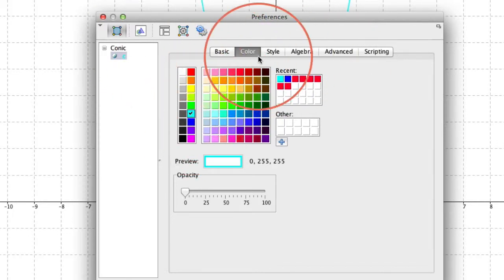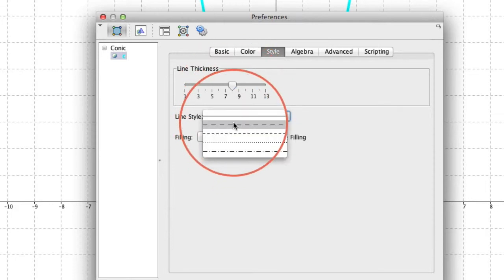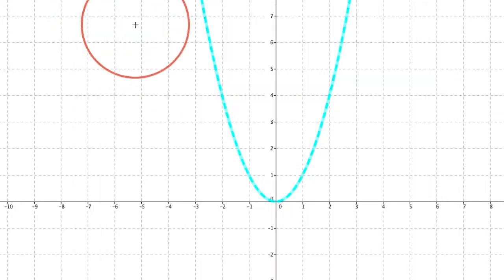I'm going to go ahead and change the color to maybe a lighter blue, and I want to make it a little bit more thick so that we can see it a little bit better, and perhaps maybe a dotted style. So we'll close out of this, click off to the side.